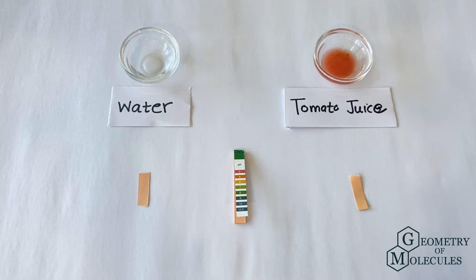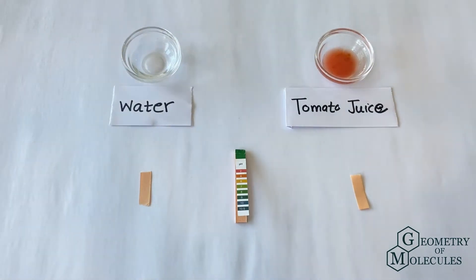Hi guys, welcome back to our channel. In today's video we will do an experiment in which we will see if tomato juice is acidic or basic using pH paper. But first, let us see what pH papers are and how to read the results.